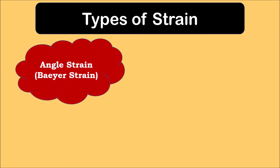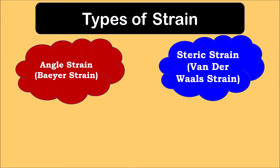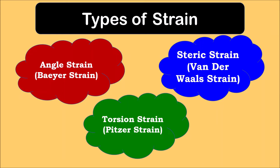Basically there are three major types of strain. First is angle strain, also called Baeyer strain. Second is steric strain, also called Van der Waals strain. Third is torsional strain, also called Pitzer strain. You must know the alternate names as well, because sometimes they ask for them — for example, they might ask what is Van der Waals strain instead of steric strain.